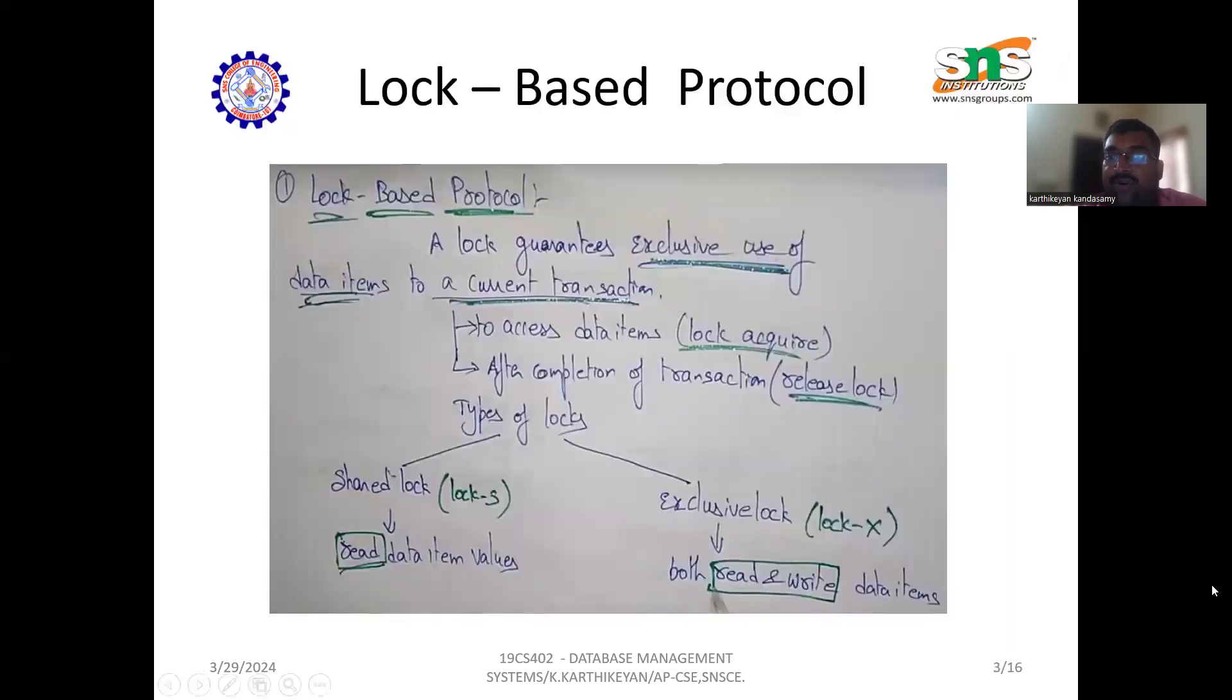Lock-based protocol: a lock guarantees exclusive use of data item to current transaction. To access the data item, lock is acquired. After completion, transaction releases the lock. We have two types of locks: one is shared, another is exclusive. The shared lock is denoted as S, the exclusive lock is denoted as X. Shared lock is only for reading data item values, but exclusive allows both read and write operations.